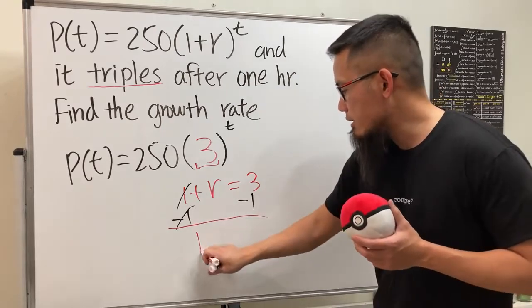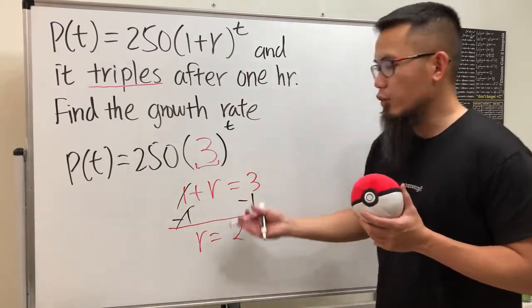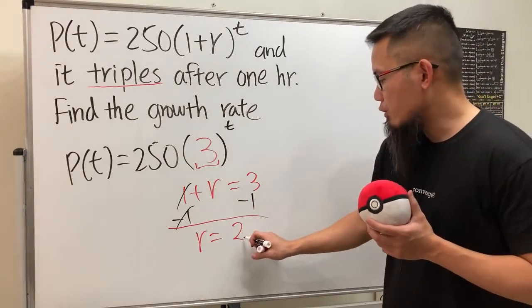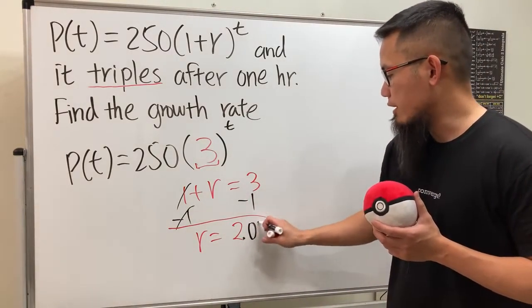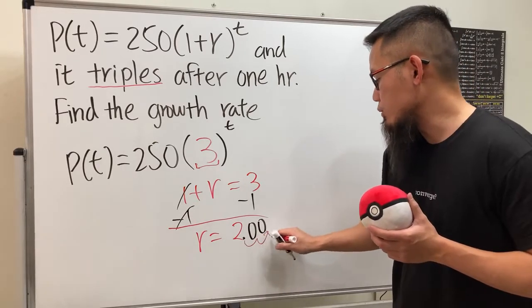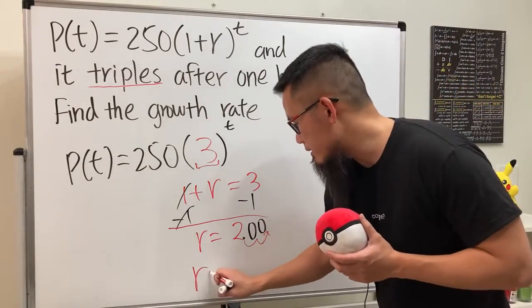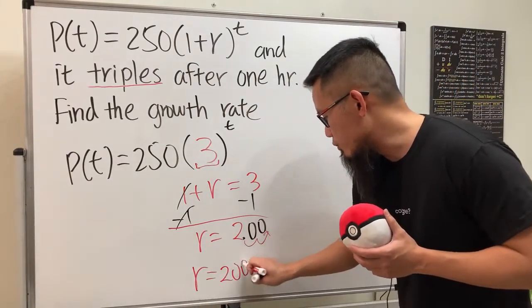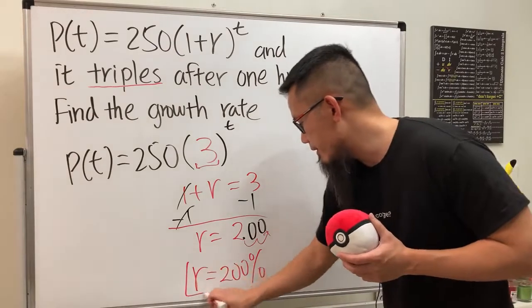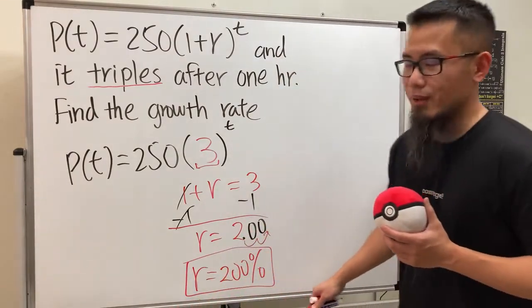we see r equals 2. But be careful, r is going to be a percentage, so this is like 2.0. We attach two more zeros, then move the decimal point twice to the right and put the percentage symbol. So the final answer is r equals 200%. Before we go, let me tell you the following: